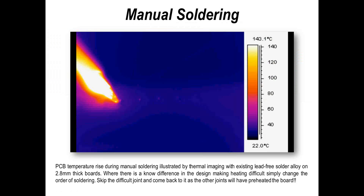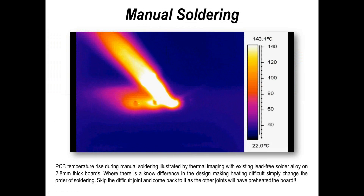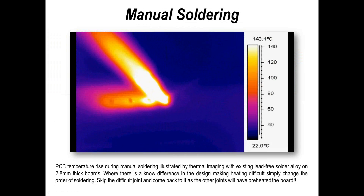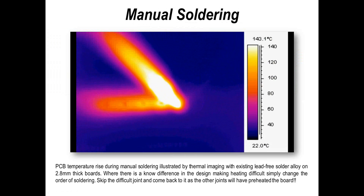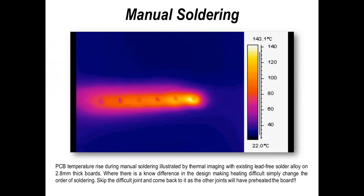One of the nice things to use to look at soldering is thermal imaging. You can see here we're adding heat to the board every time we solder a joint. One of the tricks with hand soldering with high temperature alloys or with robotic soldering is: if you have one or two joints that are difficult to solder, skip them. Do the first few, skip the next two, then do the last three and come back to those skipped joints. It's not going to affect the speed significantly with a robotic system, but you will have already preheated the board, which just makes life a lot easier.